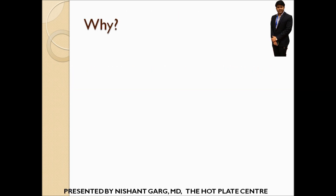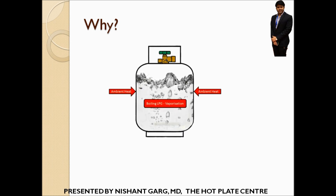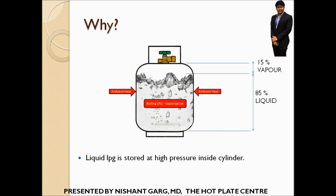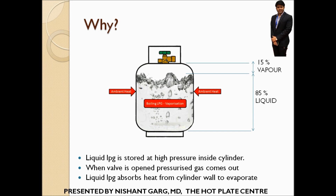In this slide I am going to explain why and how this freezing happens. To understand this, you should know the anatomy of a cylinder. A normal cylinder is filled with 85% liquid LPG and 15% LPG in gaseous state. Since the liquid LPG is stored at very high pressure, whenever the valve of the cylinder is opened, the gaseous LPG rushes out through the valve at very high pressure. To compensate for the space vacated by the gaseous LPG, the liquid LPG takes heat from the inner walls of the cylinder and boils, eventually evaporating and forming gas inside the cylinder.